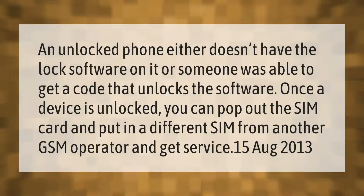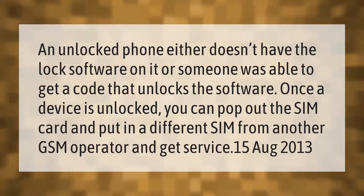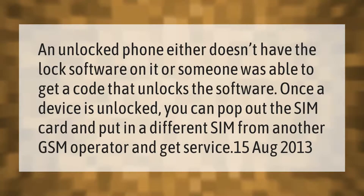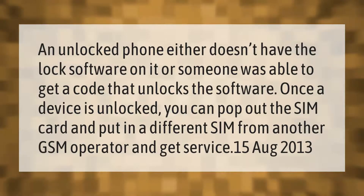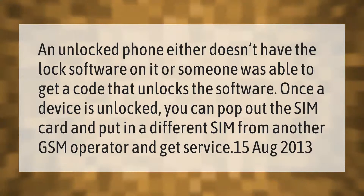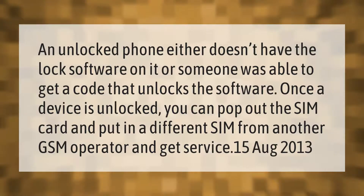An unlocked phone either doesn't have the lock software on it, or someone was able to get a code that unlocks the software. Once a device is unlocked, you can pop out the SIM card and put in a different SIM from another GSM operator and get service.